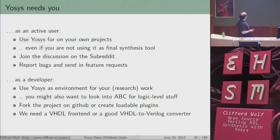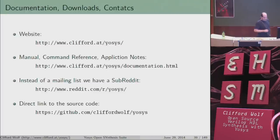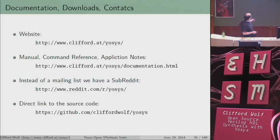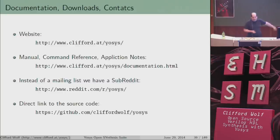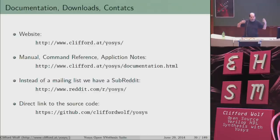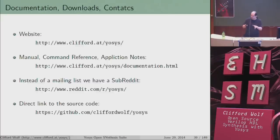We need a VHDL frontend — if anyone wants to write one. There is a website with documentation, a subreddit, and the direct link to the source code. There's a lot of documentation on the website, but there's also a README file in the source code. If you just want to give it a quick try, start with the README since it's much shorter and contains a hello world example you can just try.